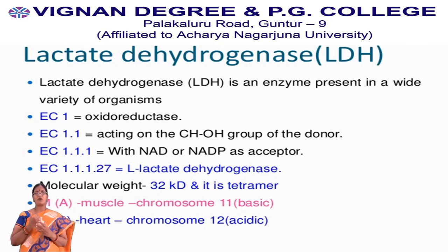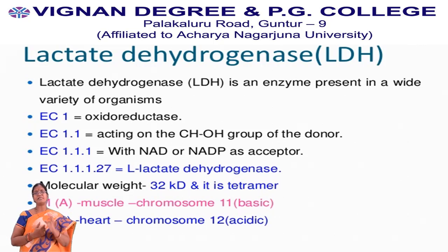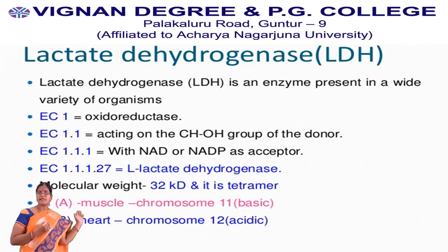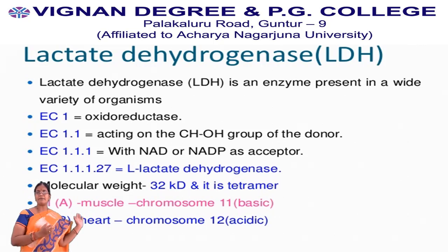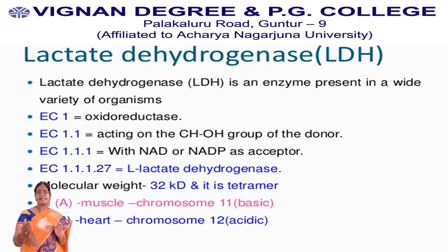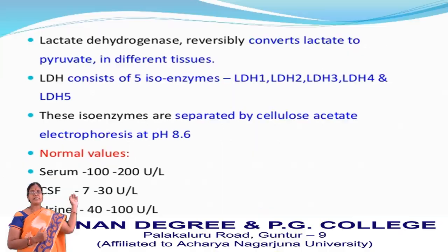Coming to the M or muscle tetramer: it is encoded by the gene present on chromosome 11, and it is basic in nature. Coming to H, which indicates heart — this tetramer is abundant in heart, and is encoded by the gene present on chromosome 12. The heart tetramer is acidic in nature.